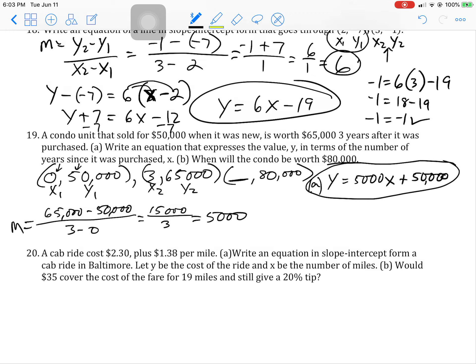Because think about it. When you put zero in for X, that would make that go away. And Y, the value at zero years is $50,000. So they want to know for B, they want to know when Y is $80,000, given that that's the rate of appreciation.